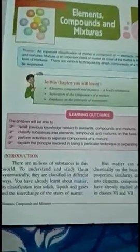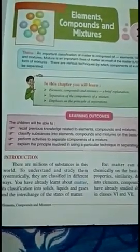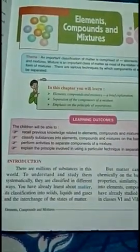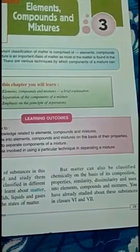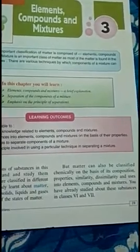We know that we have studied about matter — that matter exists in three types and is classified as solid, liquid and gases. But on the basis of their chemical composition, properties, similarities, and their uses, matter can be classified in three types: Elements, Compounds and Mixtures.